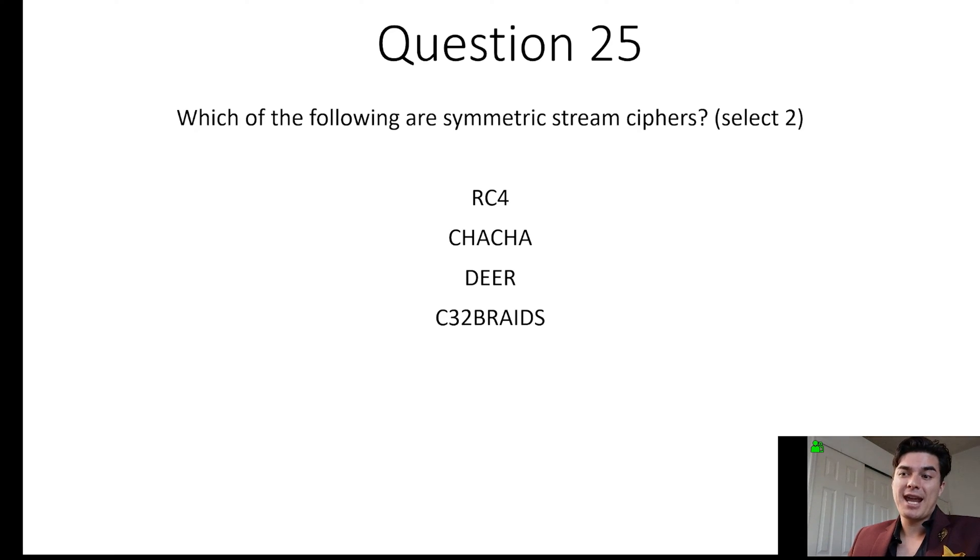Now, DEAR, that is an acronym that we use to help remember some of the asymmetric encryptions. So D on the DEAR stands for DSA, for a digital signature algorithm. E stands for ElGamal. The next E stands for Elliptic Curve Cryptography. And the R stands for RSA.